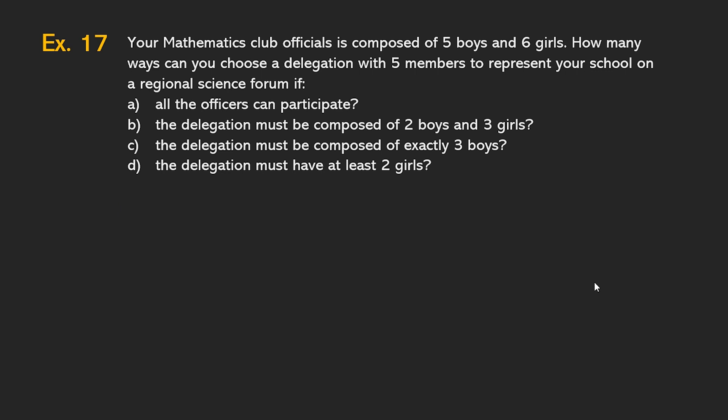Your mathematics club officials is composed of five boys and six girls. Five boys and six girls. Eleven lahat sila. How many ways can you choose a delegation of five members to represent your school in a regional science forum if: a) all the officers can participate? b) the delegation must be composed of two boys and three girls. c) the delegation must be composed of exactly three boys and d) the delegation must have at least two girls.